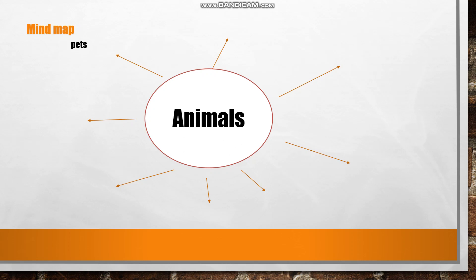Pets. Most people have pets and they are different — it may be a cat, a dog, or a bird, but they are all animals. Dangerous. Of course, animals may be very, very dangerous. They may be small, different colors — yellow, white, black, brown, and so on.